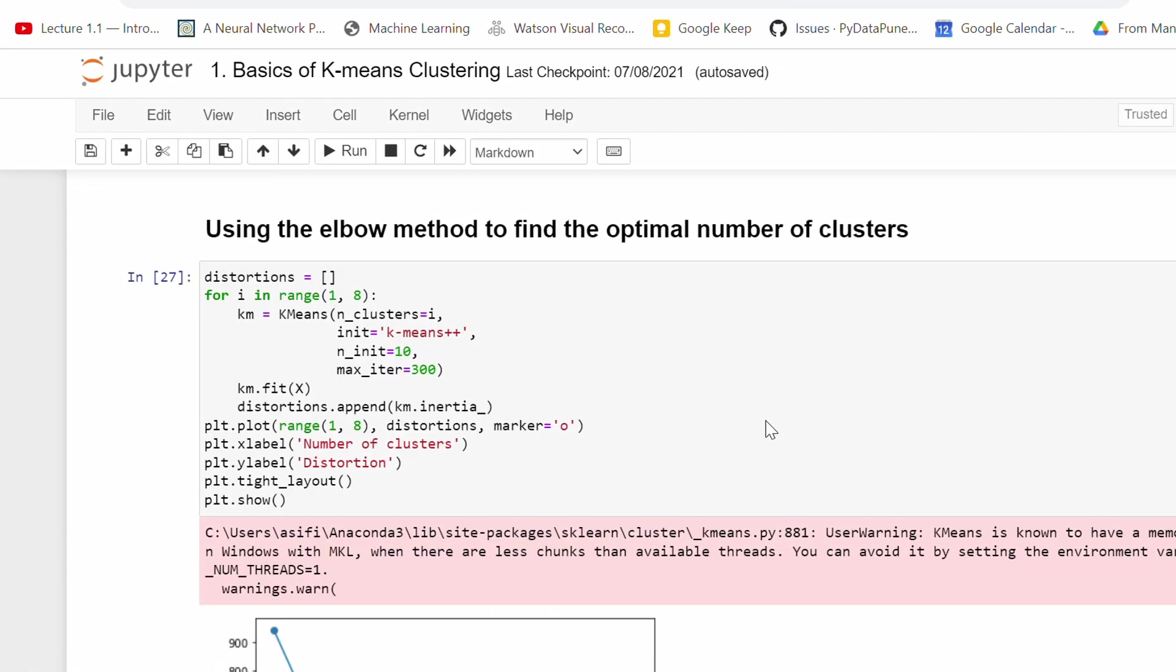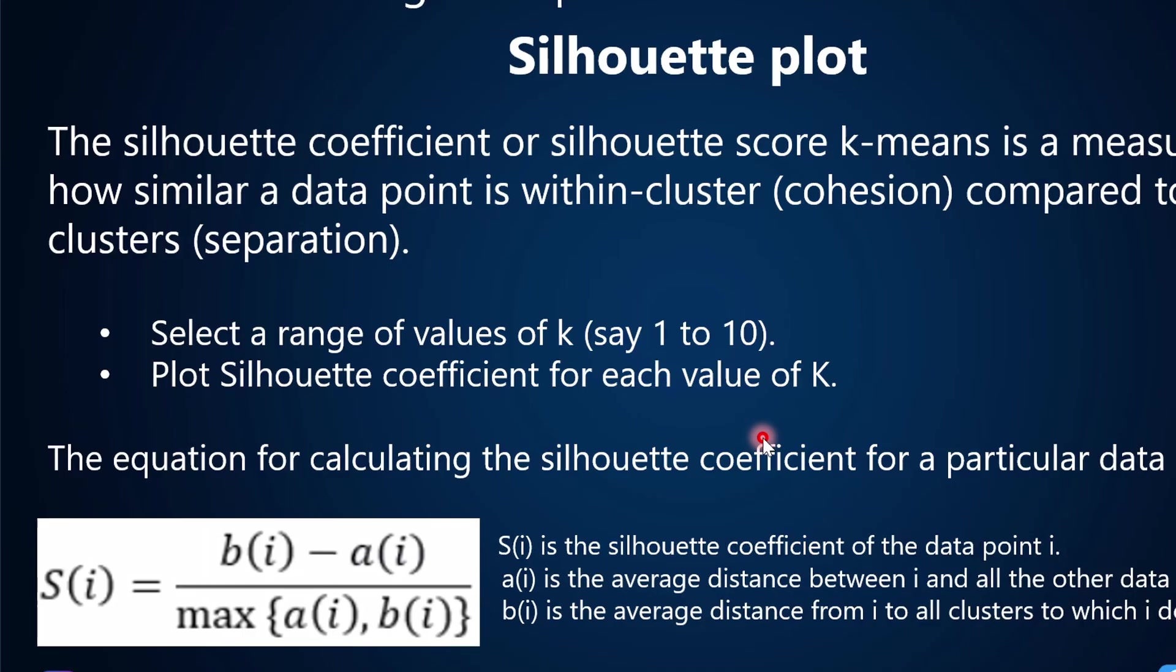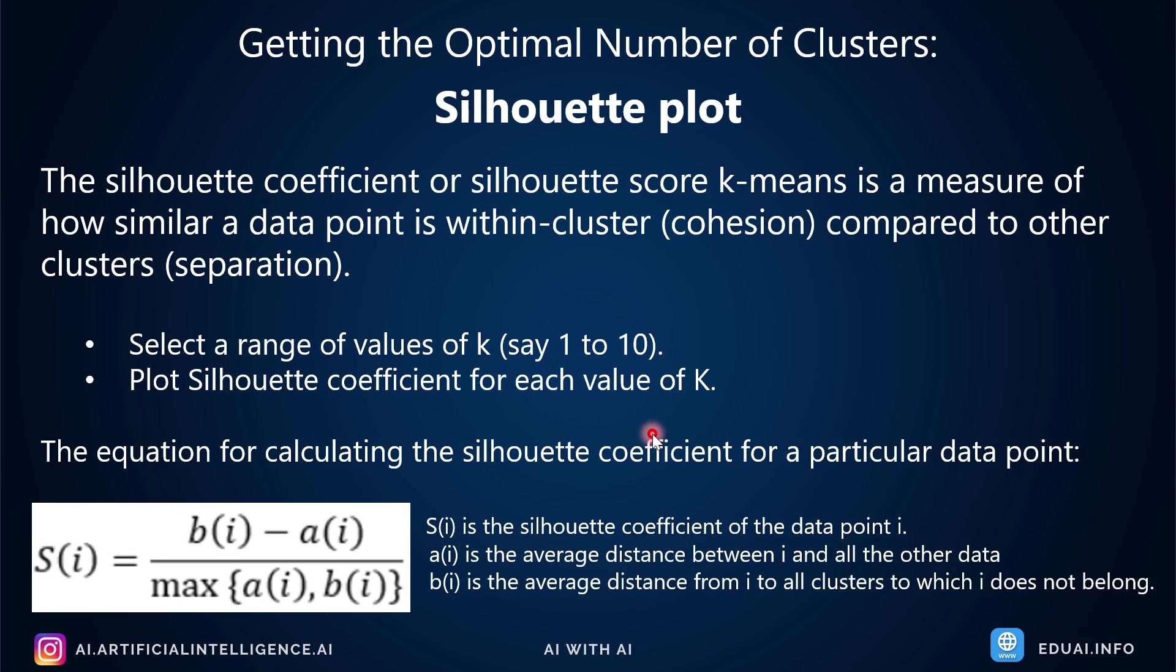Going to the second way, which is nothing but silhouette plots. Again, this silhouette plot will help us get the optimal number of clusters. What is the value of K? That is the question, right?